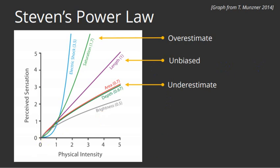You can see from this chart that humans tend to underestimate area, depth, brightness, and these are the exponent values. Length, we're pretty spot on. And then we tend to overestimate the stimulation from saturation like color saturation and electric shock.